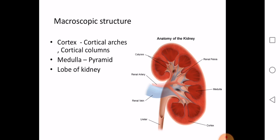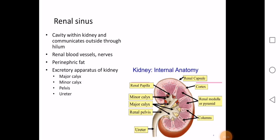The renal sinus refers to the cavity within the kidney that communicates outside through the hilum. The renal sinus contains the renal blood vessels, nerves, perinephric fat, and the excretory apparatus — the major calyx, minor calyx, pelvis, and ureter. The ureter exits through the hilum.